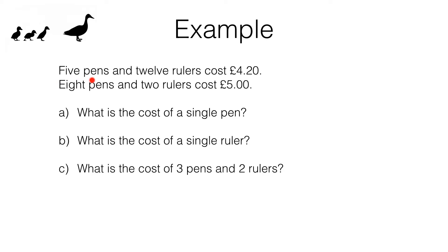Here's the question: five pens and 12 rulers cost £4.20, eight pens and two rulers cost five pounds. Using that information we have to work out the cost of a single pen, the cost of a single ruler, and the cost of three pens and two rulers. Now if we know the cost of a single pen and a single ruler, doing part C will be easy, but how do we get these costs first?